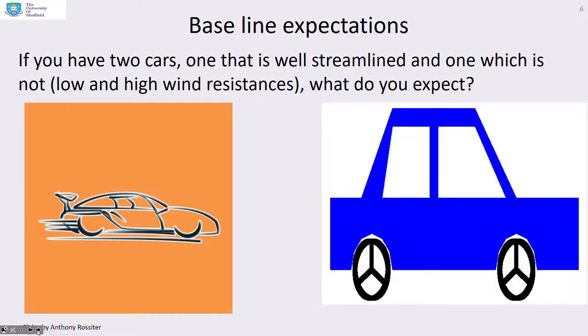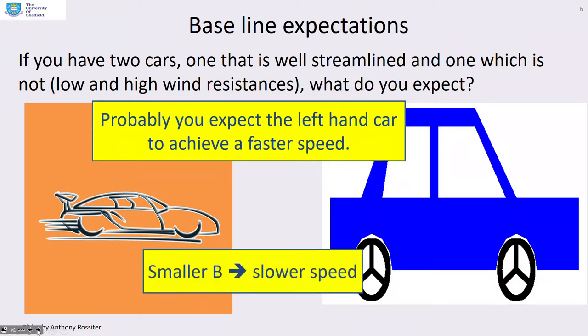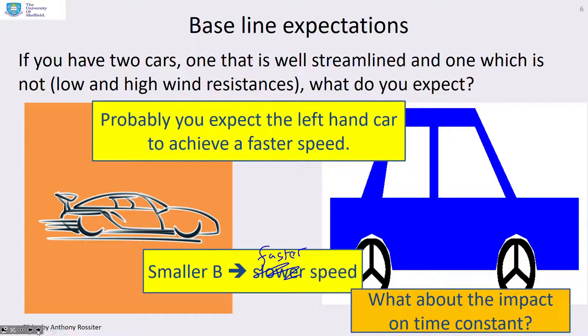More baseline expectations. If you've got two cars, one that's well streamlined such as the racing car on the left, and one which is not, such as this one on the right—clearly one has a low resistance and the other has high resistance. So what would you expect? Well, probably you'd expect the left hand car would achieve a faster speed for the same force on the road. So in other words, if B is smaller, then you would expect a faster speed on the road. And what about the impact on the time constant? We're not going to look at that here, but we'll get to that soon.